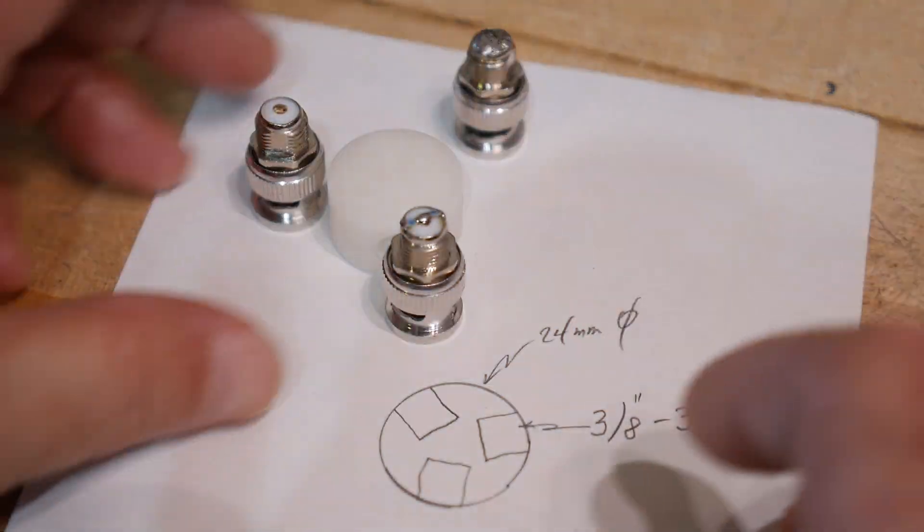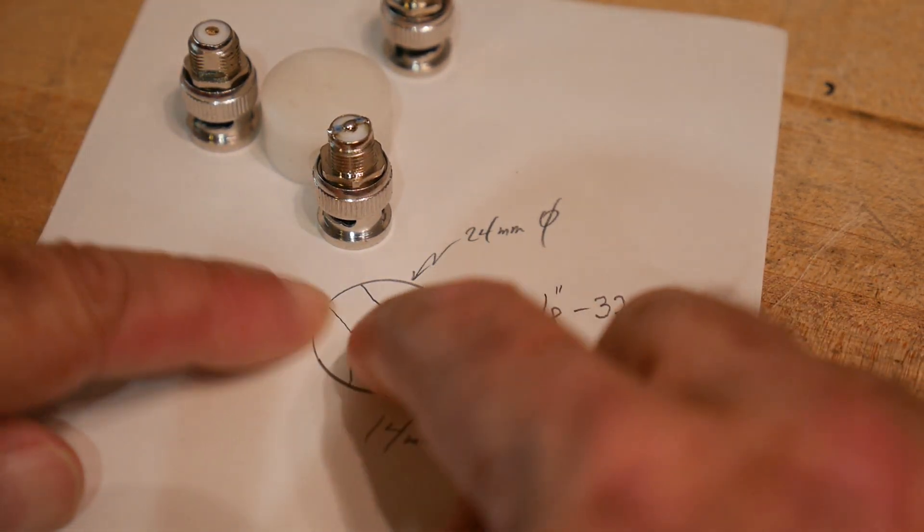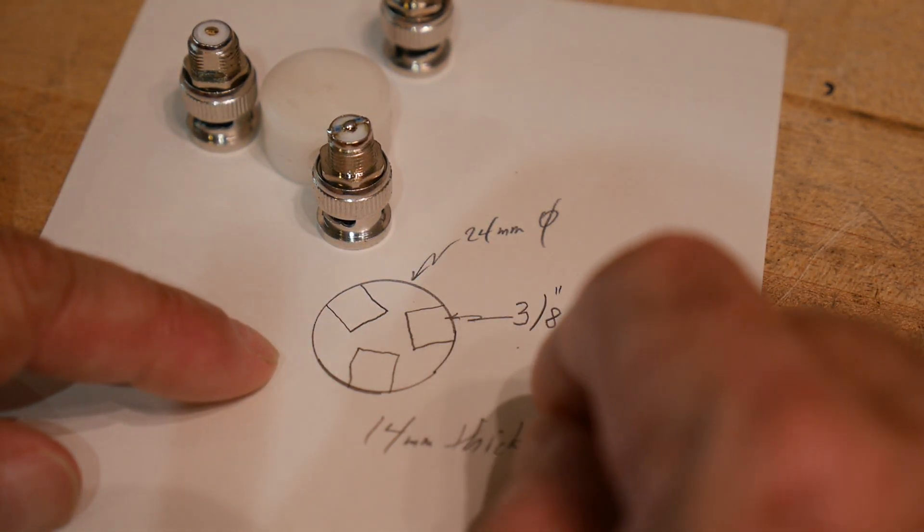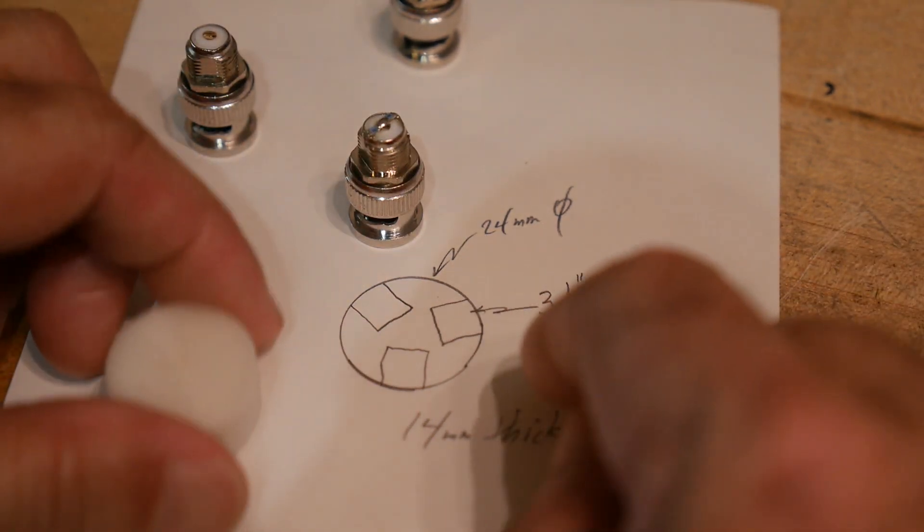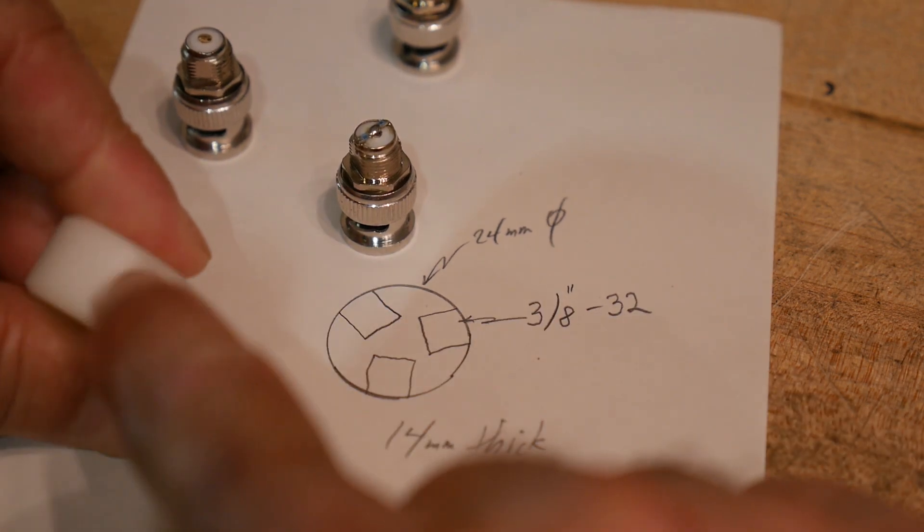I decided to make it round in shape and I'm going to have three threaded holes. If you want to make one of these, I'm making it 24 millimeters in diameter and 14 millimeters thick.